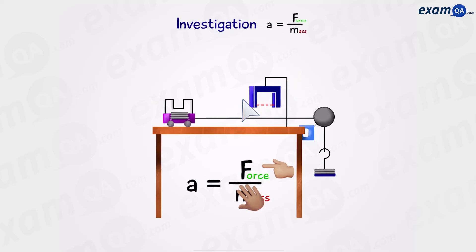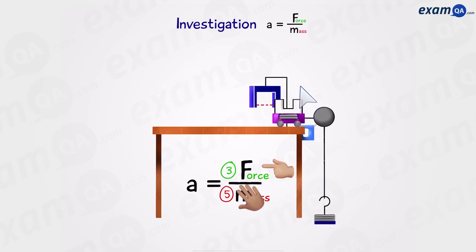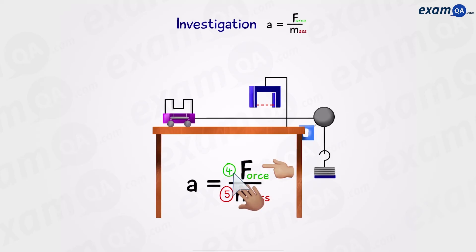Reset and transfer another weight from the trolley to the hanging masses. But again, the mass of the whole system is still going to be 5, 3 plus 2. However, force now has increased to 2. Run the experiment and record acceleration. Reset and again, notice mass is still 5, 2 plus 3. However, force has increased now to 3 and acceleration. We keep on doing this until all the masses have transferred from the trolley onto the hanging masses and record acceleration.